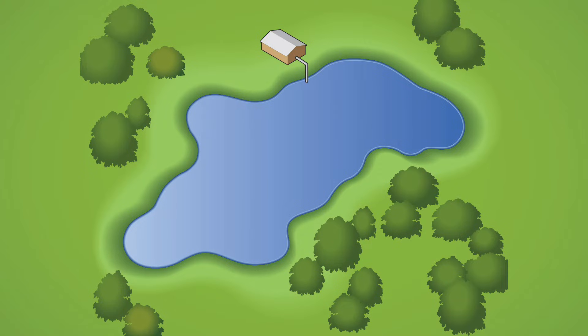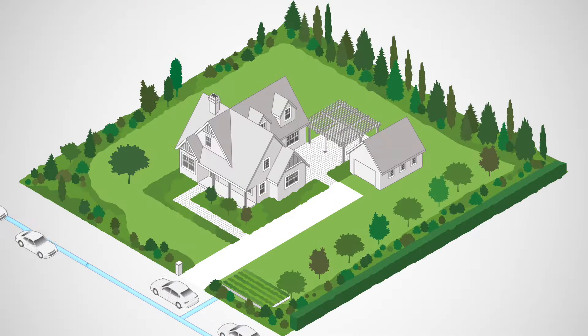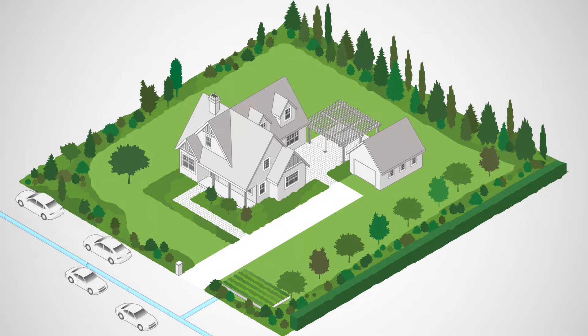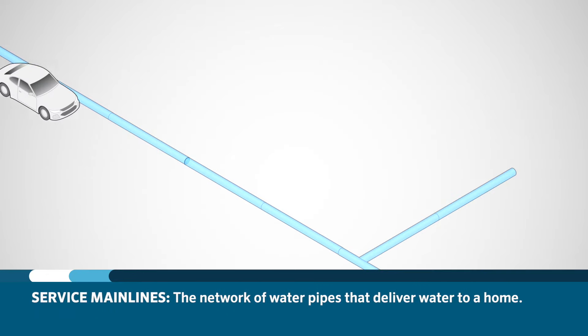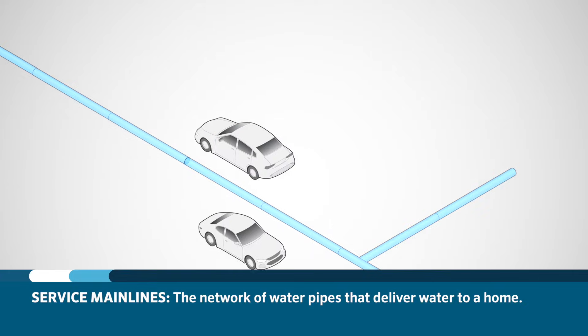All irrigation systems require a water source. It may seem obvious, but it will be very important to know where the water is coming from, so make sure to verify the water source before beginning your installation. Water sources may vary from site to site and region to region. The water source might be delivered in a network of pipes that run under the roads we drive on every day, referred to as service mainlines.